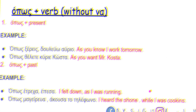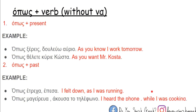We can also use όπως with a verb, but unlike σαν it does not take να. For example, όπως plus present: Όπως ξέρεις, δουλεύω αύριο. Όπως θέλετε, κύριε Κώστα. And with past tense: Όπως έτρεχα, έπεσα. Όπως μαγείρευα, άκουσα το τηλέφωνο.